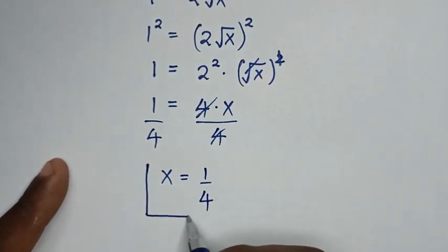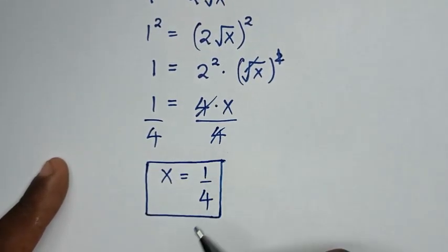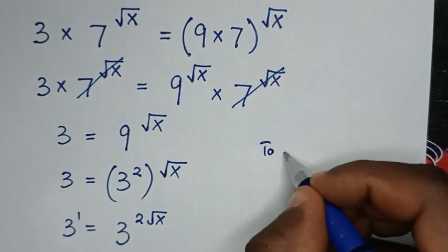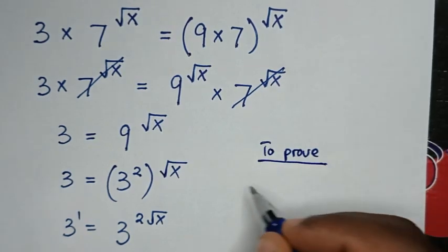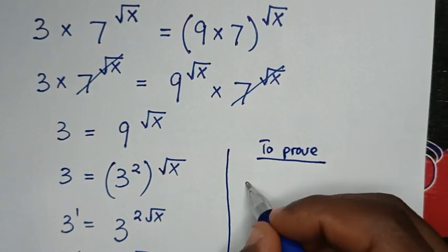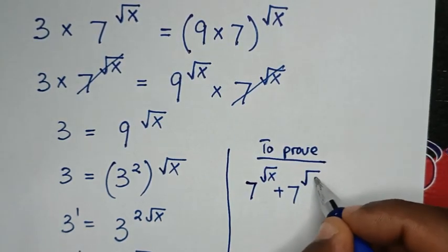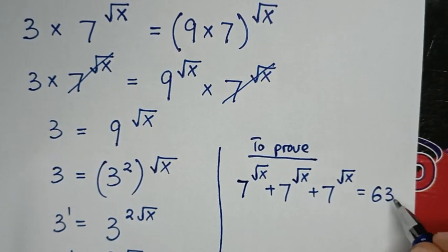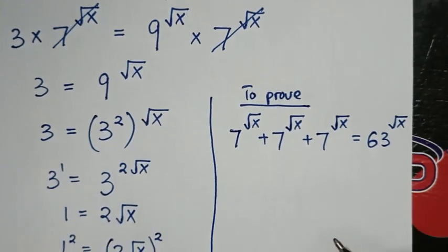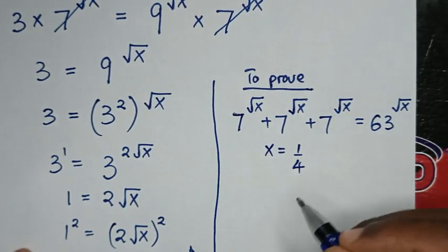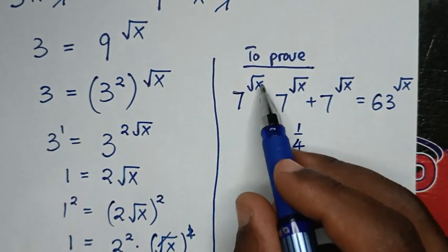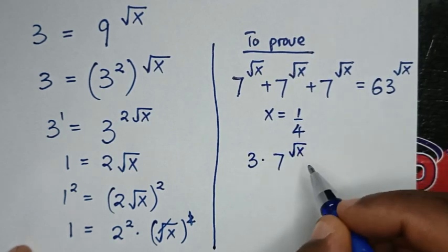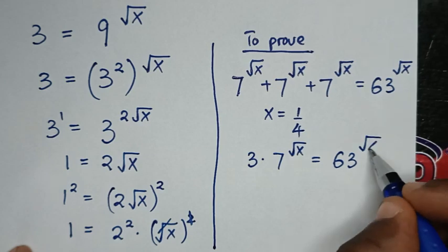Now let's prove that our answer is correct. From our original problem, 7 power square root of x plus 7 power square root of x plus 7 power square root of x equals 63 power square root of x. Since there are three terms of 7 power square root of x, this simplifies to 3 times 7 power square root of x is equal to 63 power square root of x.